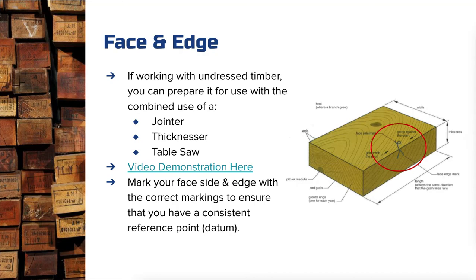The other component in preparation of timber is determining the face side and face edge. When working with undressed timber, you need to dress it using a jointer, then a thicknesser, then a table saw — in that order. A jointer is like a thicknesser, but instead of auto-feeding, the blade points upwards from the base of the table and you run the timber across it — that's why it's really dangerous and not used in schools. I've linked a video demonstration so you can see how a jointer works in getting that initial face on an undressed board.